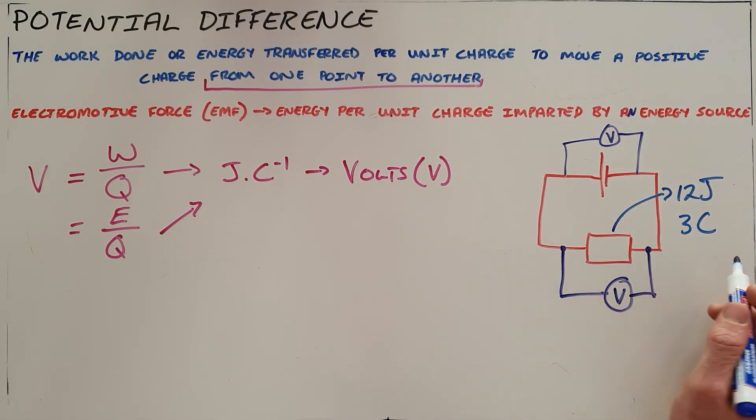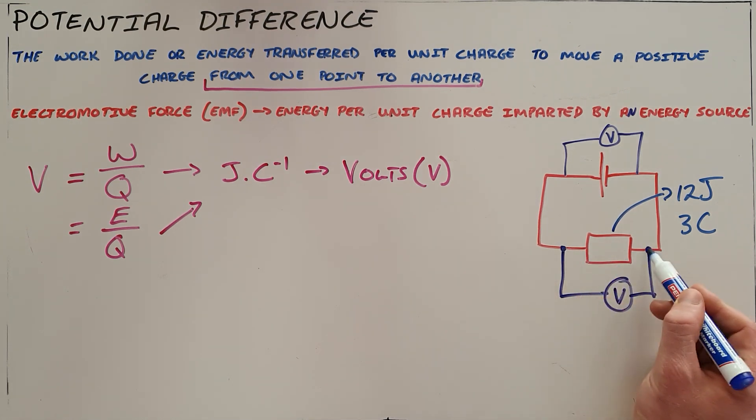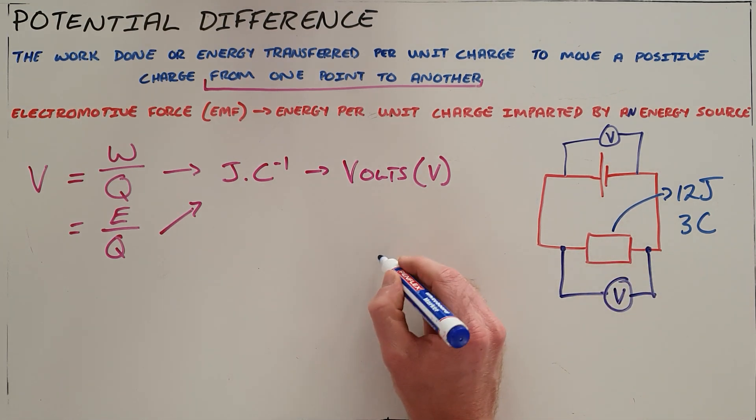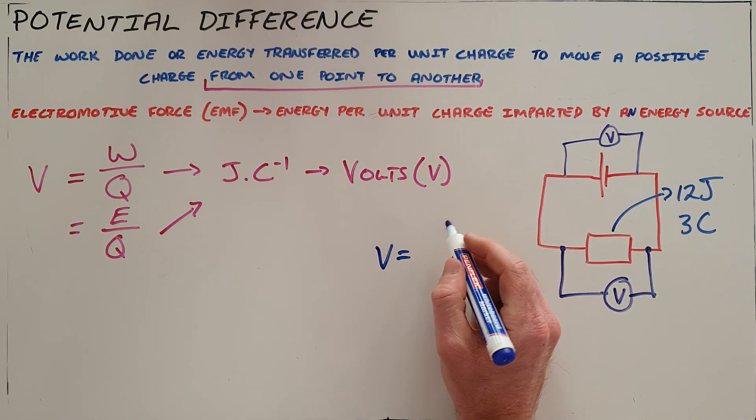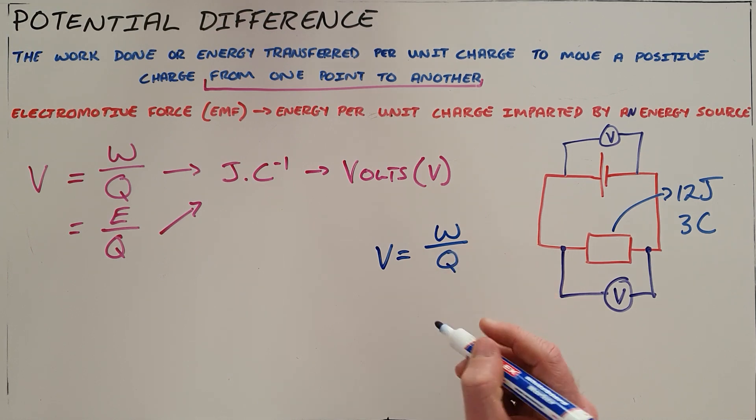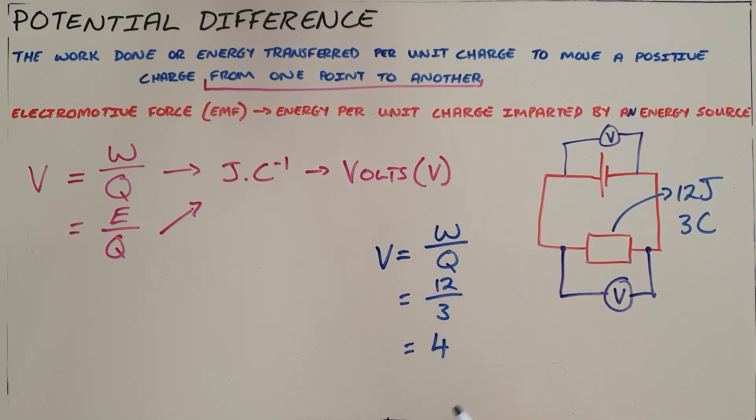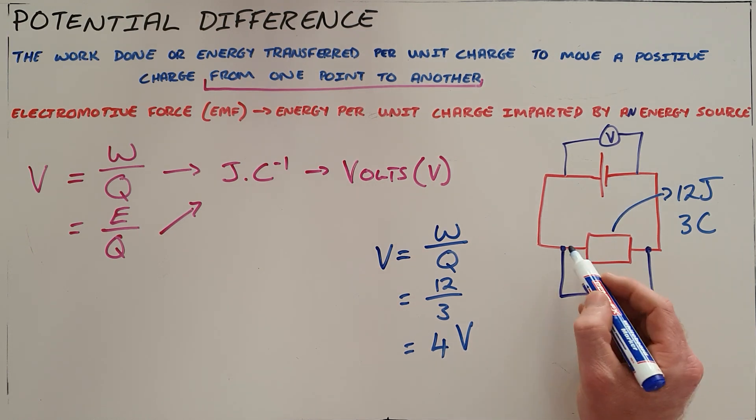What is the potential difference across that resistor? We can say that V is equal to the amount of work that is done divided by the charge, and that is 12 joules divided by three coulombs. We can say that there are four joules per coulomb of charge or four volts of potential difference between these two points in the circuit.